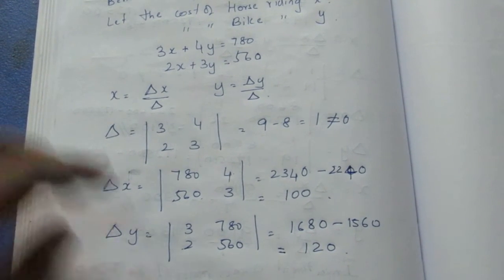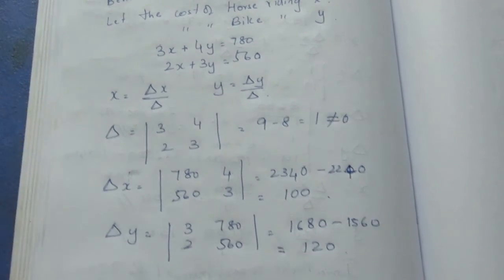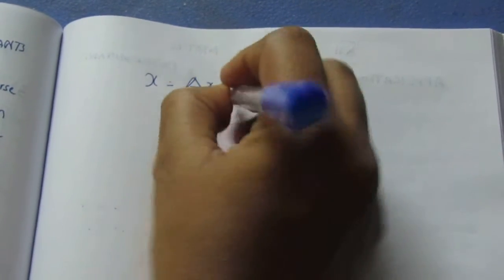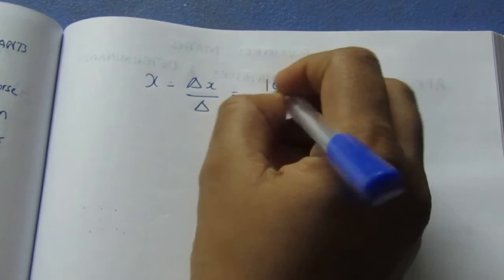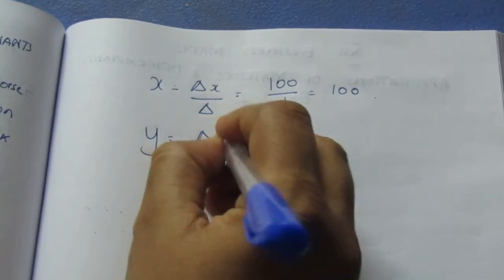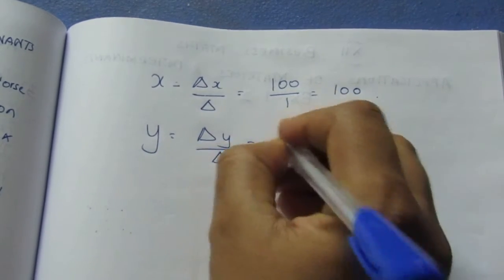Computing the determinant: 3 times 560 is 1680, minus 2 times 780 is 1560. Subtracting gives us 120. So determinant y equals 120.